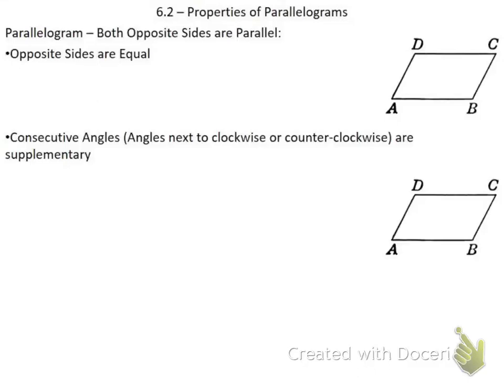Today and tomorrow we'll both be working with parallelograms. The definition of a parallelogram is that opposite sides are parallel to each other. So with each of these shapes, the sides across from each other are going to be parallel. On the first shape on the top right, you can put a single arrow through the top and bottom, and then two arrows through the left and right to show that opposite sides are parallel.